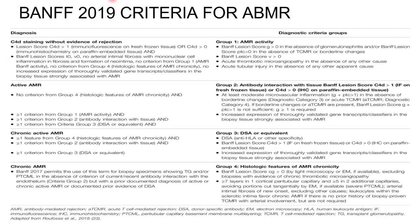The latest is the 2019 Banff criteria. As shown on the first slide, there are five categories: first is normal, second is antibody mediated rejection, third is borderline, fourth is T-cell mediated rejection, and fifth is polyomavirus nephropathy. In detail with respect to the 2019 ABMR, questions will definitely be asked. They have classified it as acute active, chronic active, chronic inactive, and C4d staining without evidence of rejection.